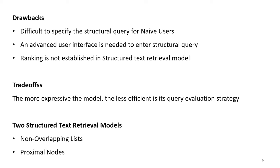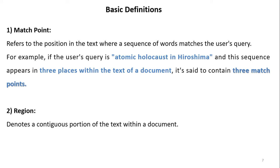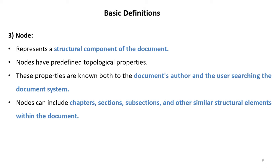Two structural models are discussed here: non-overlapping list and proximal nodes. Before discussing the models, some basic definitions: a match point refers to the position in the text where a sequence of words matches the user's query. For example, if the user query is 'atomic holocaust in Hiroshima' and this sequence appears in 3 places in the document, it is said to contain 3 match points. A region is a contiguous portion of text within a document. A node represents a structural component of the document and is the basis for the structured model.